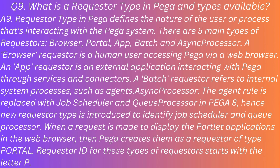Question: What is a requester type in PEGA and what types are available? Answer: Requester type in PEGA defines the nature of the user or process interacting with the PEGA system. There are five main types of requesters: browser, portal, app, batch, and async processor. A browser requester is a human user accessing PEGA via a web browser. An app requester is an external application interacting with PEGA through services and connectors. A batch requester refers to internal system processes such as agents. The async processor is a new requester type introduced in PEGA 8, replacing the agent rule with job scheduler and queue processor. When a request is made to display portal applications in the web browser, PEGA creates them as a requester of type portal; requester IDs for these start with the letter P.